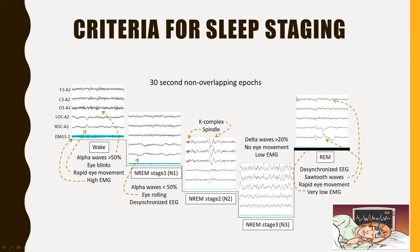REM sleep is called paradoxical sleep because the REM sleep EEG will be almost similar to a wake EEG, even though the person is asleep. Therefore, by looking at EEG alone it is very difficult to distinguish whether the person is in REM sleep or wake state. This is why EOG and EMG play a very important role: we can see rapid eye movements, and EMG will be completely atonic, allowing classification as REM sleep.